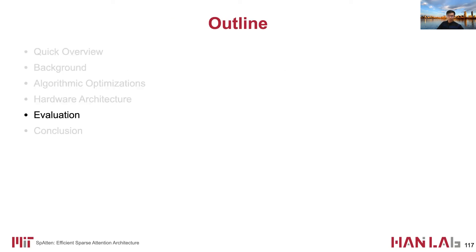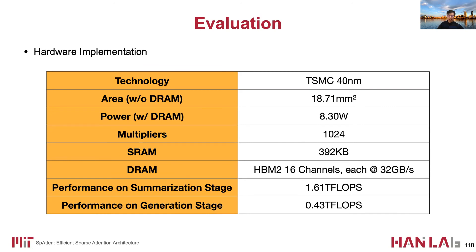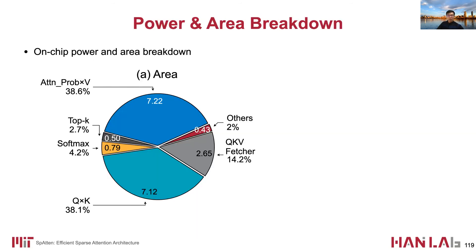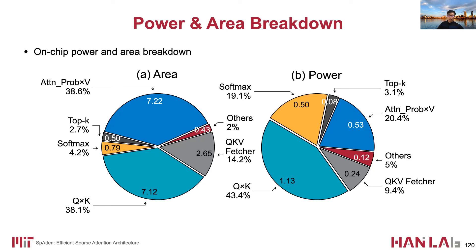For Spartan evaluation, we implemented and synthesized the architecture with TSMC 40nm technology. Spartan has 18.7 mm² area and 8.3 watts power. It consists of 1024 multipliers, 392 KB SRAM, and 16-channel HBM2, with each channel providing 32 GB/s bandwidth. Performance on the summarization stage is 1.6 TFLOPS and 0.43 TFLOPS for the generation stage. The query×key module and attention_probability×V module take the most on-chip area. The power of the attention_probability×V module is smaller than the query×key module because local value pruning removes part of the V vectors.